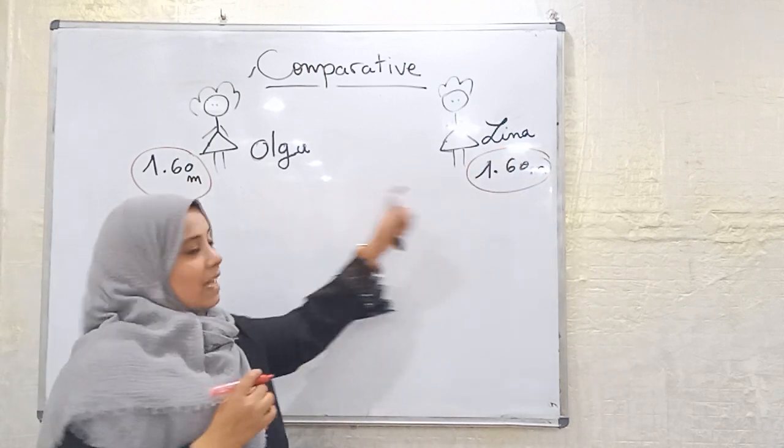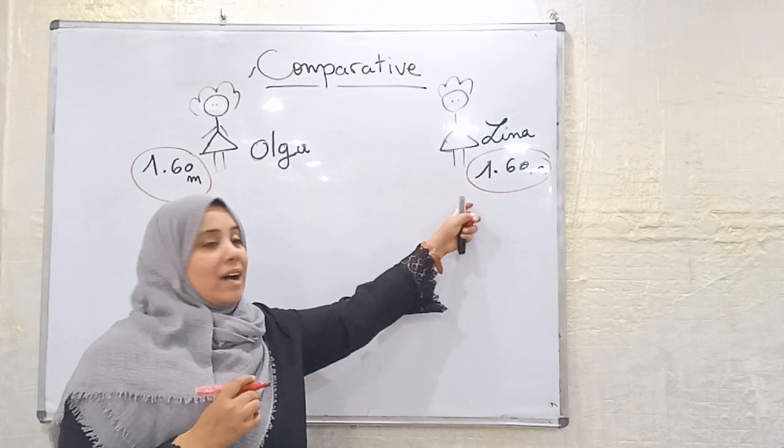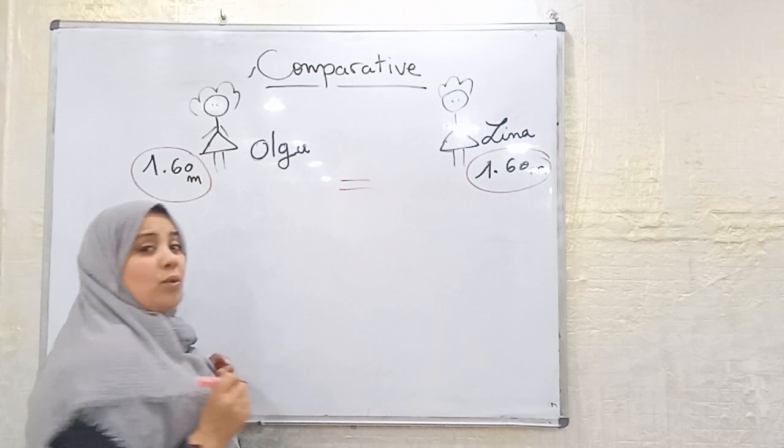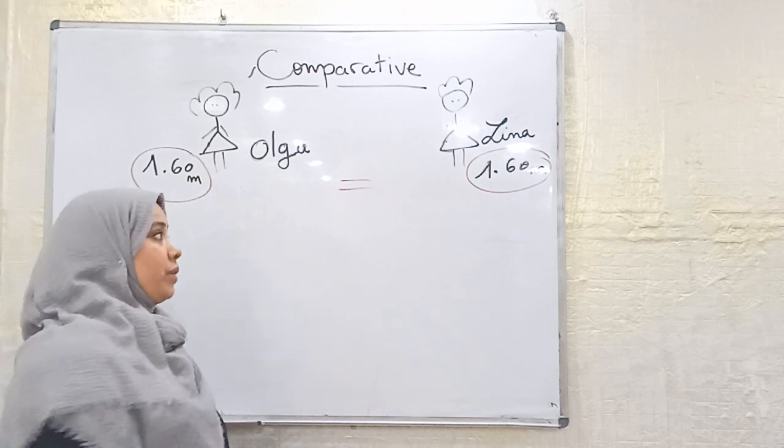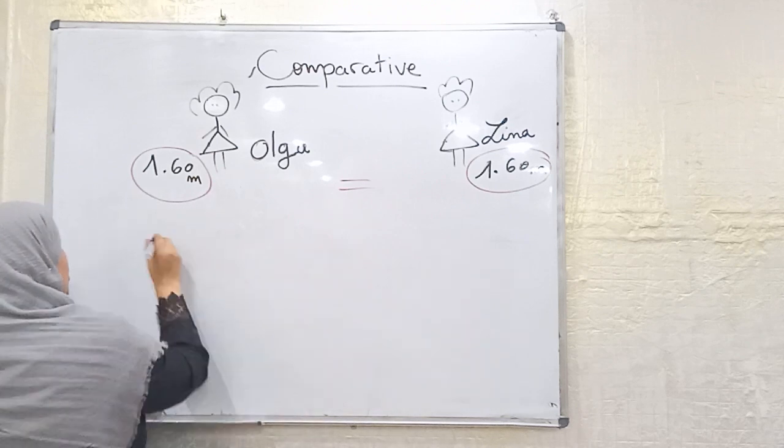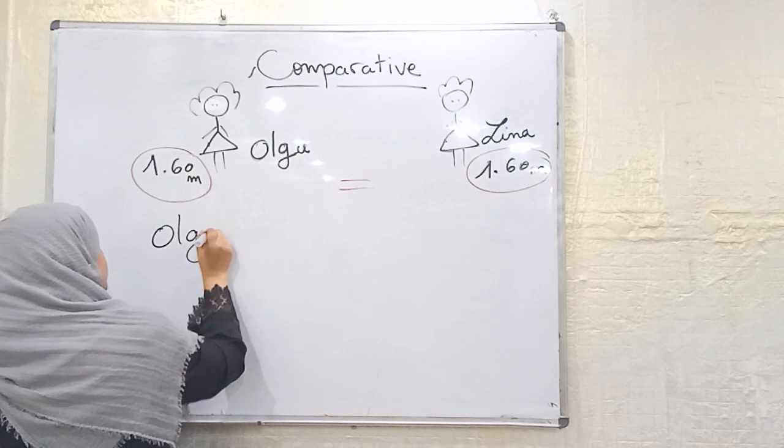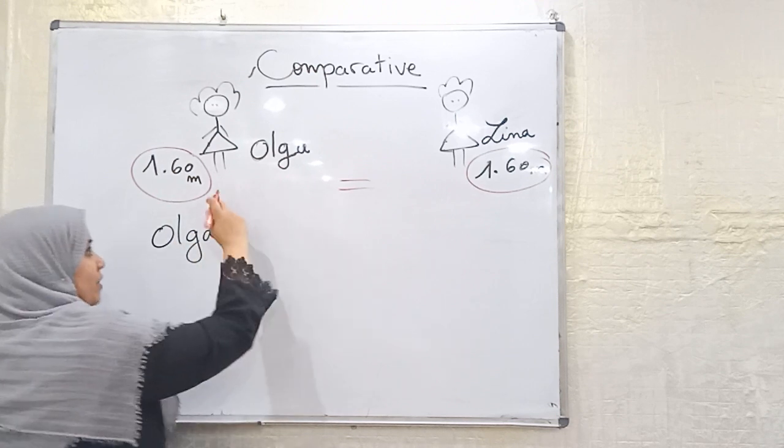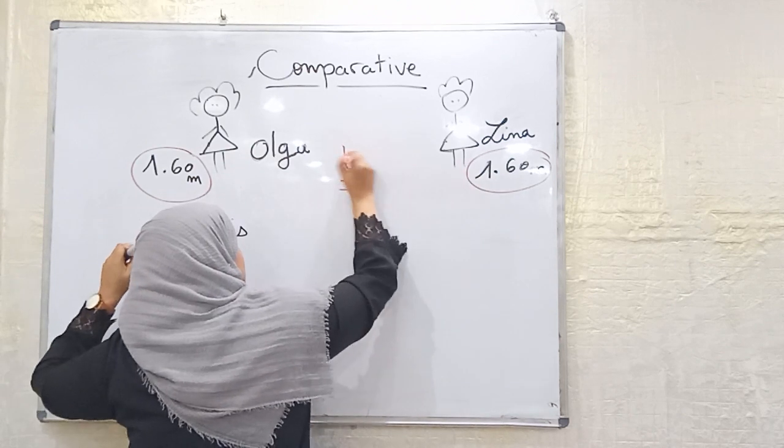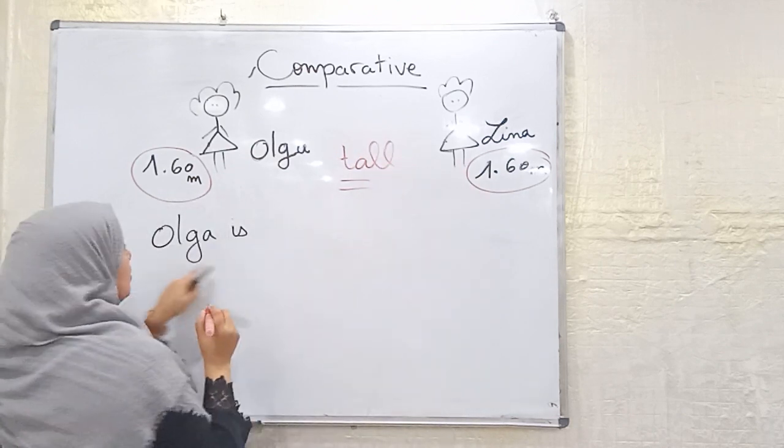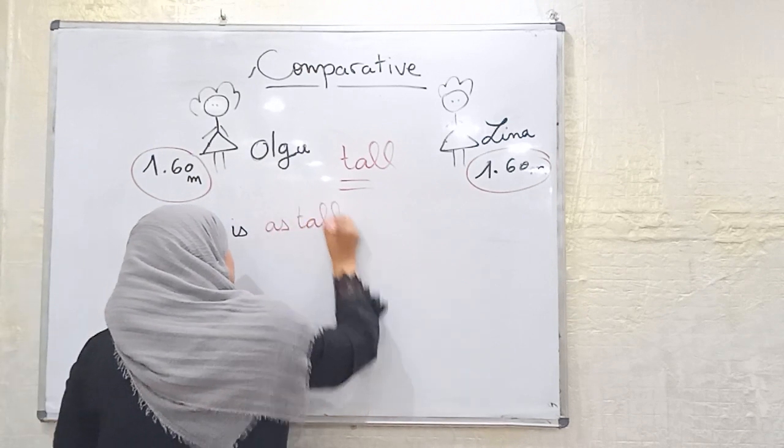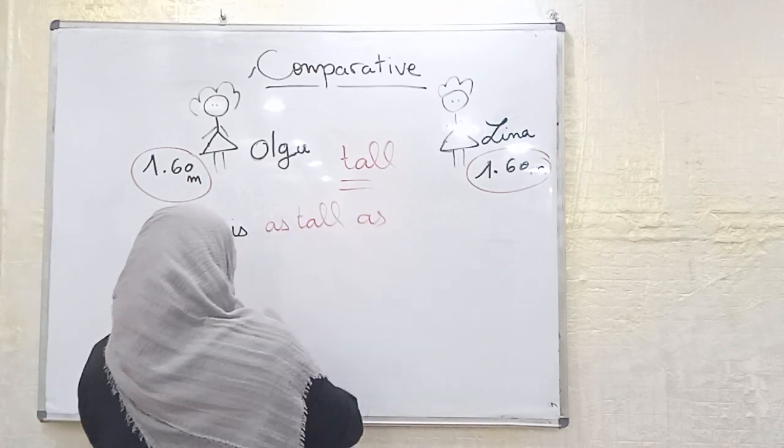So both Olga and Lina are 1 meter 60, so they are equal. That is an equality. So here we can say Olga is, so both are here 1 meter 60, they are tall for example. Olga is as tall as Lina.